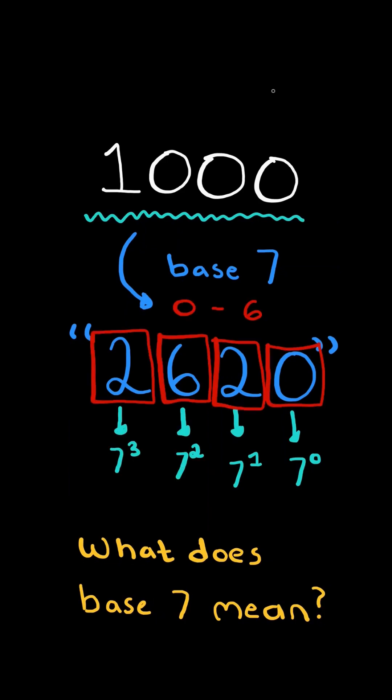These individual digits can range between 0 and 6, and these digits represent the coefficients to each term. We add all these terms together, and this gives us the original number.